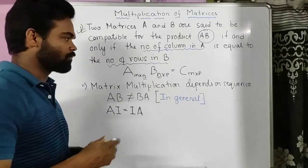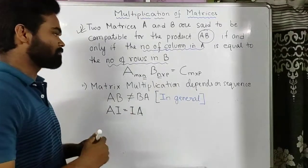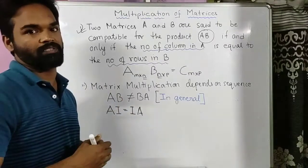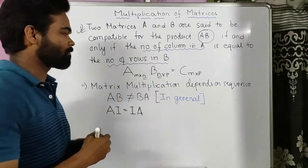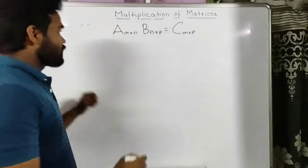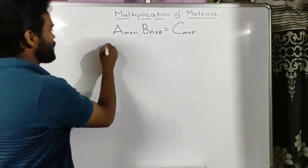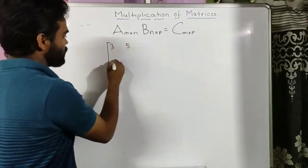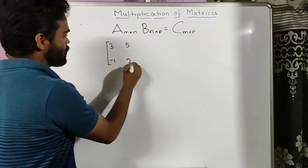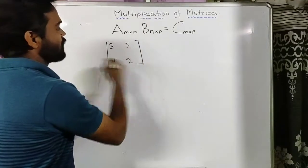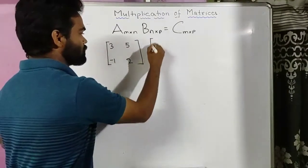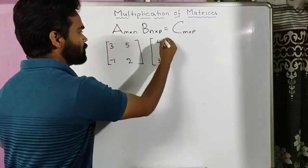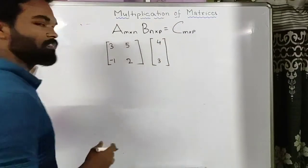Now we'll look at how to multiply two matrices. Suppose we take matrix A as [3, 5; -1, 2] and matrix B as [4; 3].